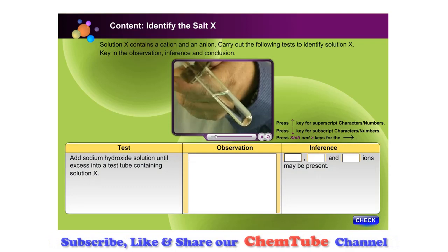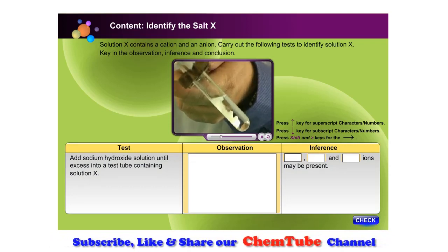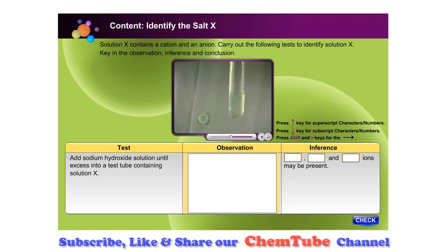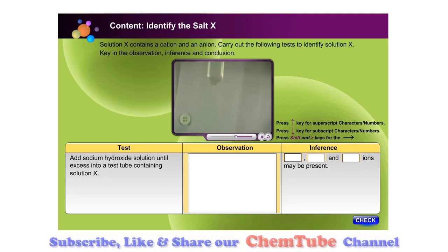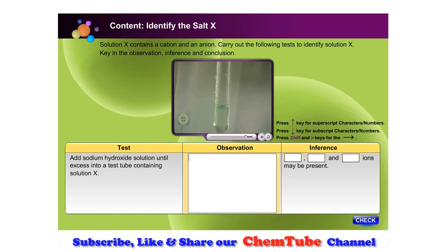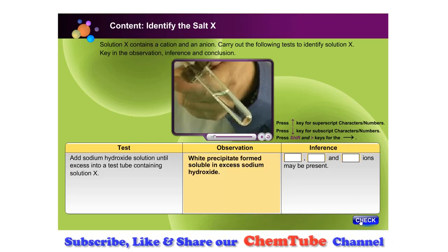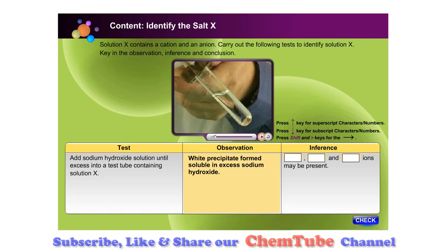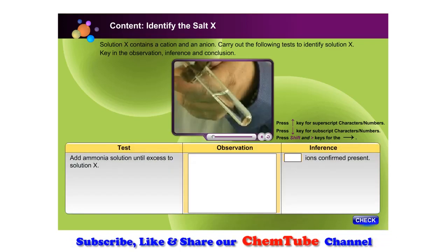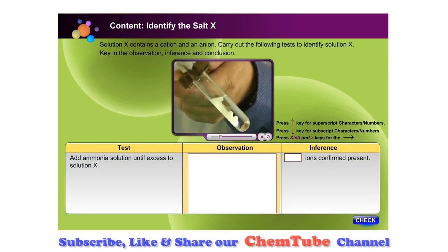Add sodium hydroxide solution until excess into a test tube containing solution X. Then add ammonia solution until excess to solution X.